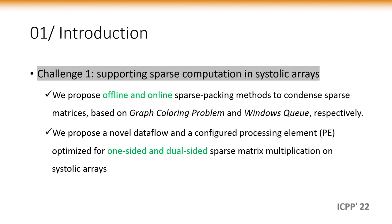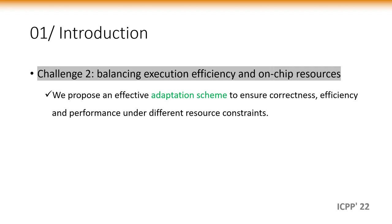For challenge 1, we propose offline and online sparse packing methods to compress sparse matrix based on graph coloring problem and window queue respectively. We propose a new data flow and configure the process element optimized for one-sided and dual-sided sparse matrix multiplication on systolic arrays. For challenge 2, we propose efficient adaptive sharing scheme to ensure correctness, efficiency, and performance on different resource constraints.